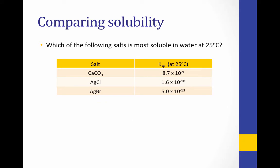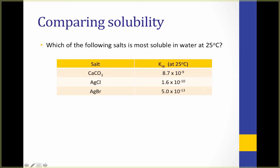So what does KSP tell us? Take a look at the KSP values for these salts and consider which is the most soluble in water. Calcium carbonate has the highest KSP value — recall that these are negative exponents, so that is actually the largest number. Therefore, calcium carbonate has the greatest solubility; its equilibrium position lies farthest to the right. The concentration of dissolved ions for calcium carbonate is higher than those of silver chloride and silver bromide — it is more soluble, and more of it will dissolve in a given volume of water.